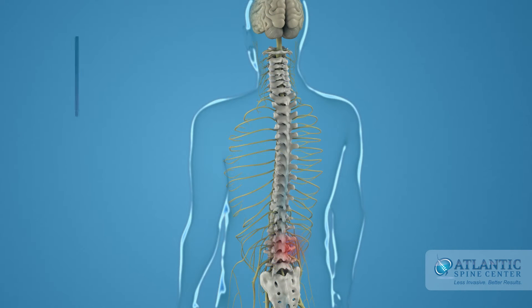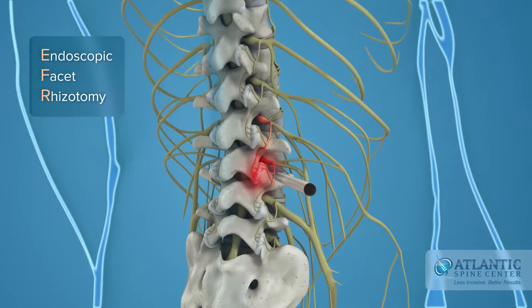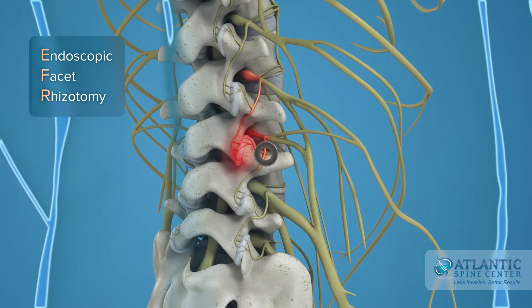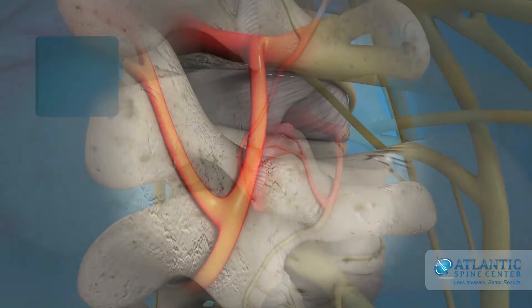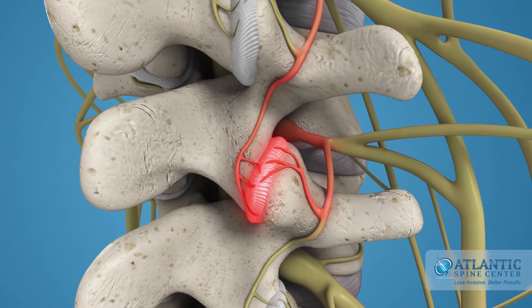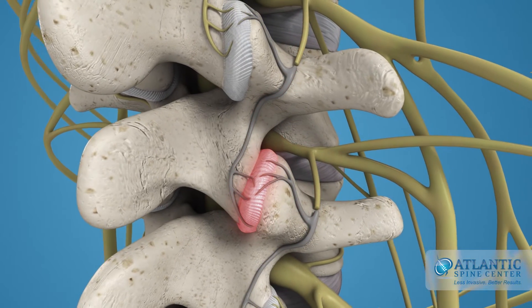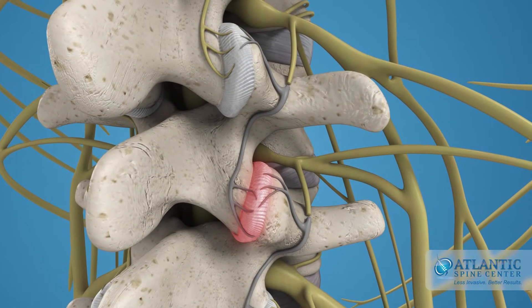Endoscopic lumbar rhizotomy is a minimally invasive procedure that can be done through a very small portal. Back pain is relieved by cutting the medial branch nerves, which only have a sensory function.